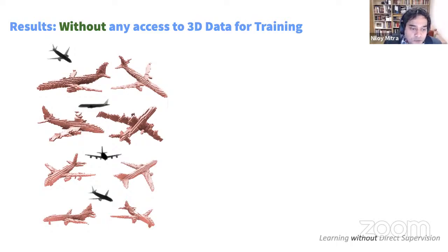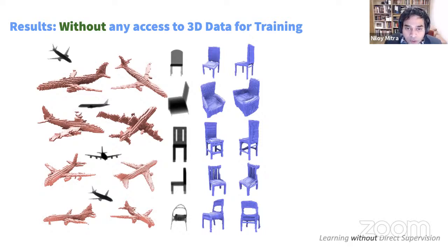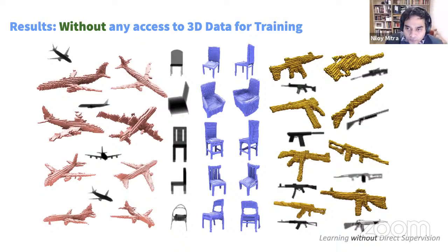The method also works for chairs, even with complex concavities or holes — not as clean as StructureNet, but the supervision type is entirely different. It works for very different types of domains and classes. Quantitative results are shown across three modalities: visual hull, absorption-only, and emission-absorption. We perform reasonably well relative to strong baselines. It also works on unusual data like a mushroom dataset collected from the web with manual segmentation, and on volumetric X-ray data.